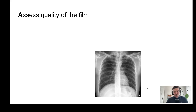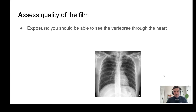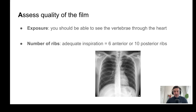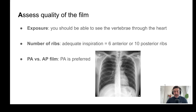Next in the mnemonic is assessing the quality of the film. For exposure, you should be able to see the vertebrae through the heart — and you can make out the vertebrae here through the heart silhouette. For the number of ribs, you can pause and count, but trust me there are six anterior as well as ten posterior.